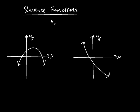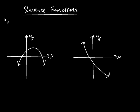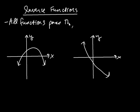We're going to talk about what are called inverse functions. I have graphed two functions, and I know they're functions because they both pass the vertical line test. Remember what the vertical line test is — it's whenever you draw a vertical line, if any vertical line intersects the graph at a maximum of one point. No vertical line crosses either graph more than once. All functions pass the vertical line test.